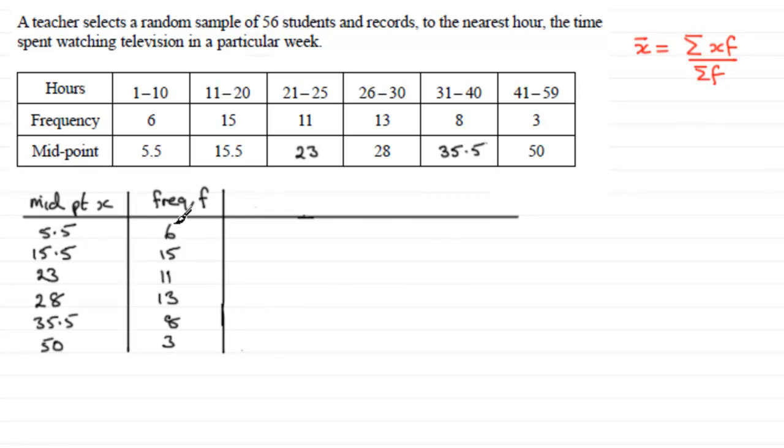So we need these values here. Well, the total frequency is easy because we've just got to add this column up or just check out what we've got up here. It's going to come to 56. So sigma of f, sum of the frequencies, is going to equal 56.